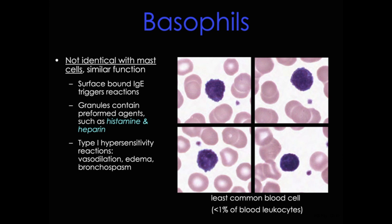Basophils are also important signaling molecules — they call eosinophils to the site of inflammation and allergic reactions. So with neutrophils, eosinophils, and basophils, that's it for the granulocytes.